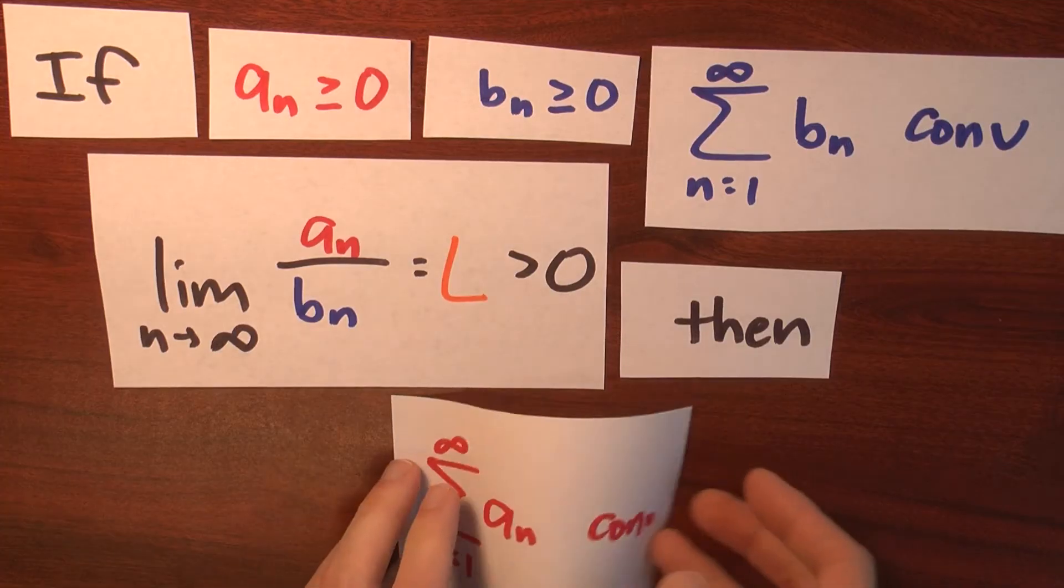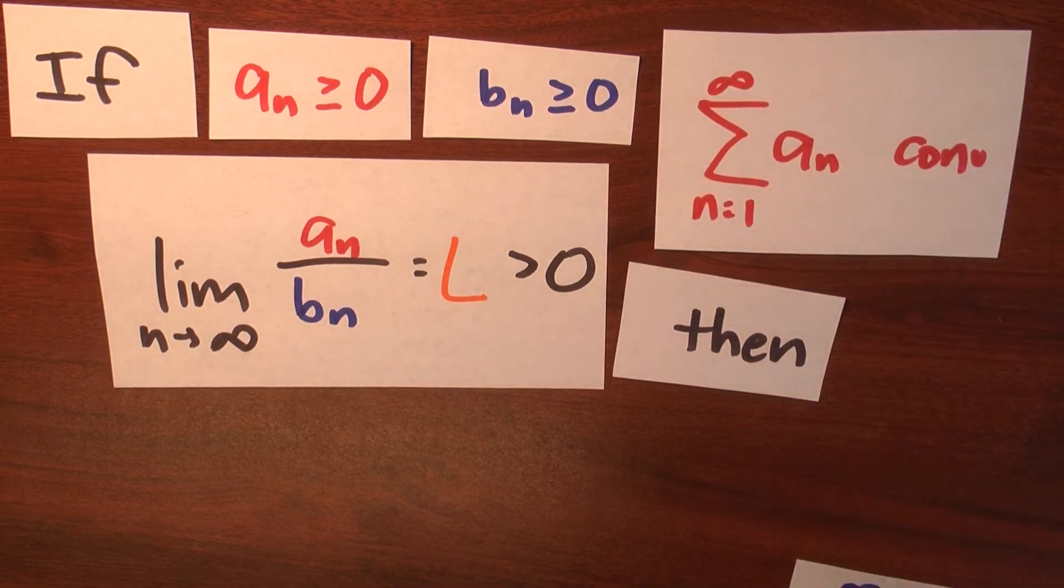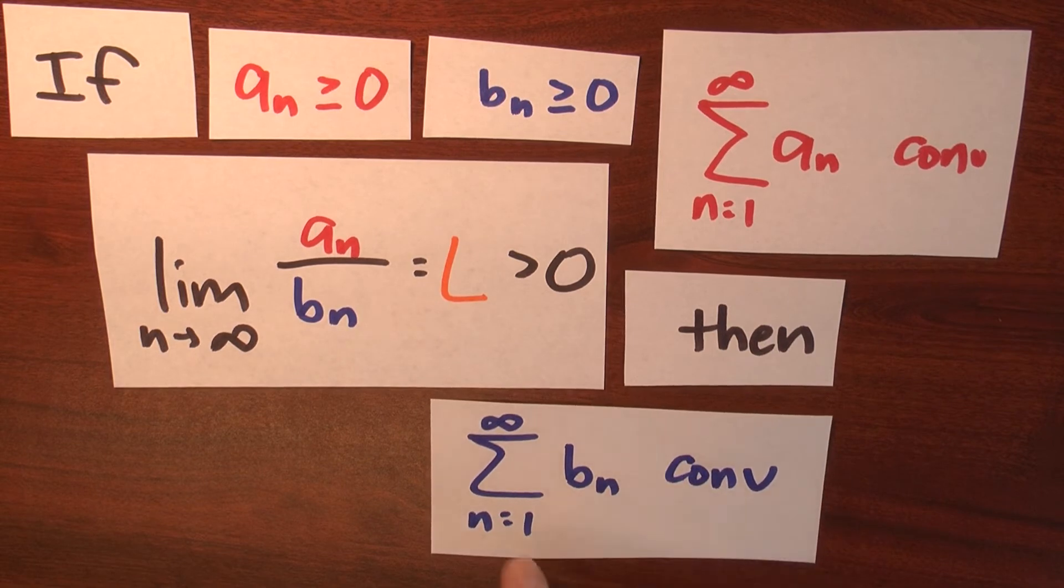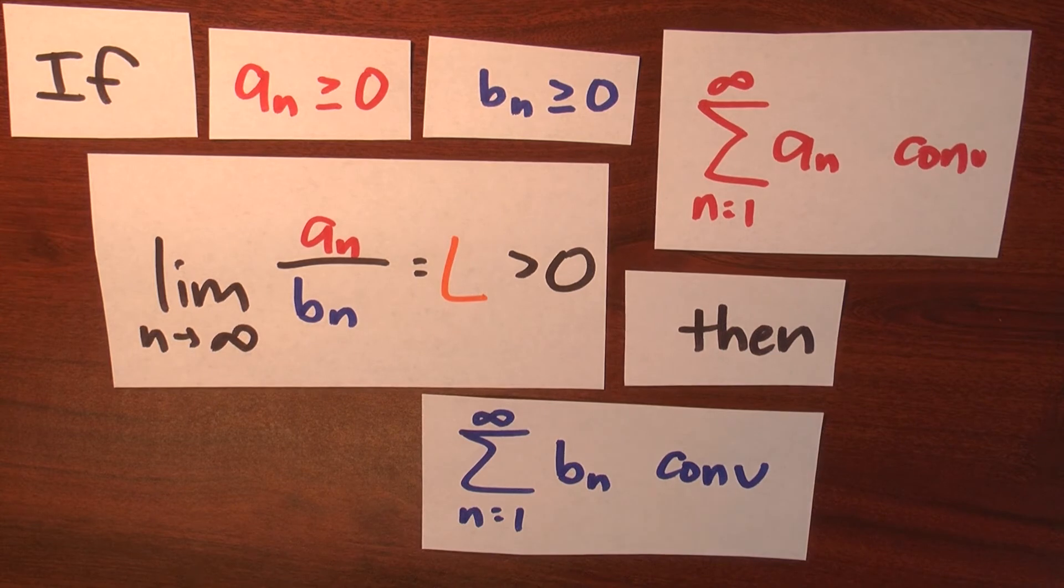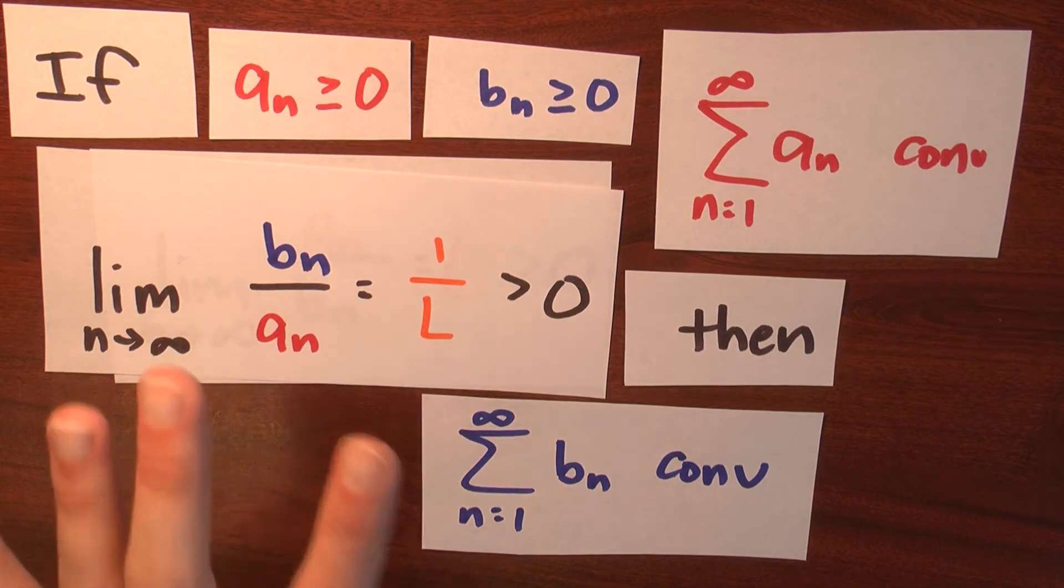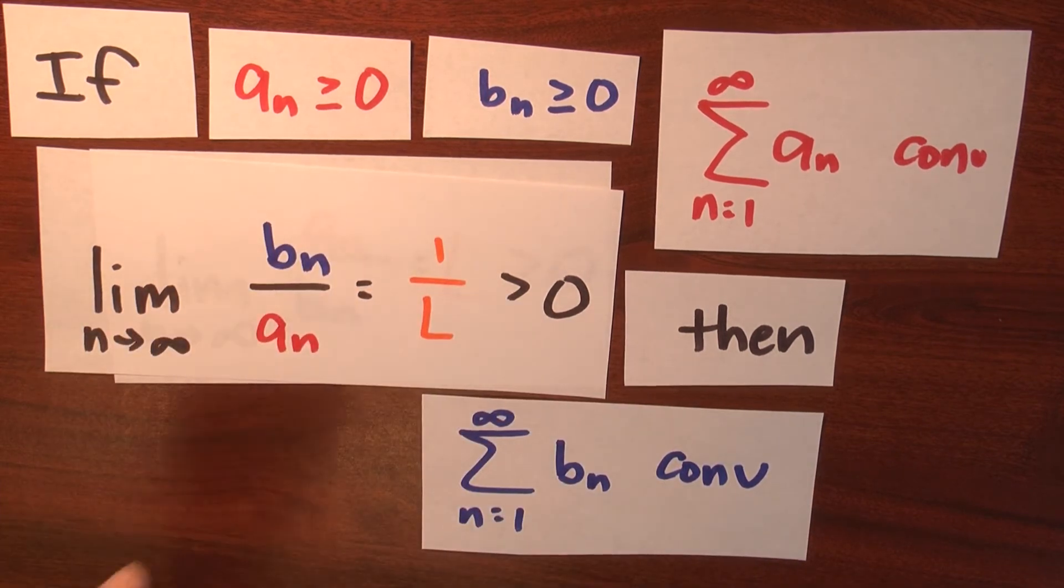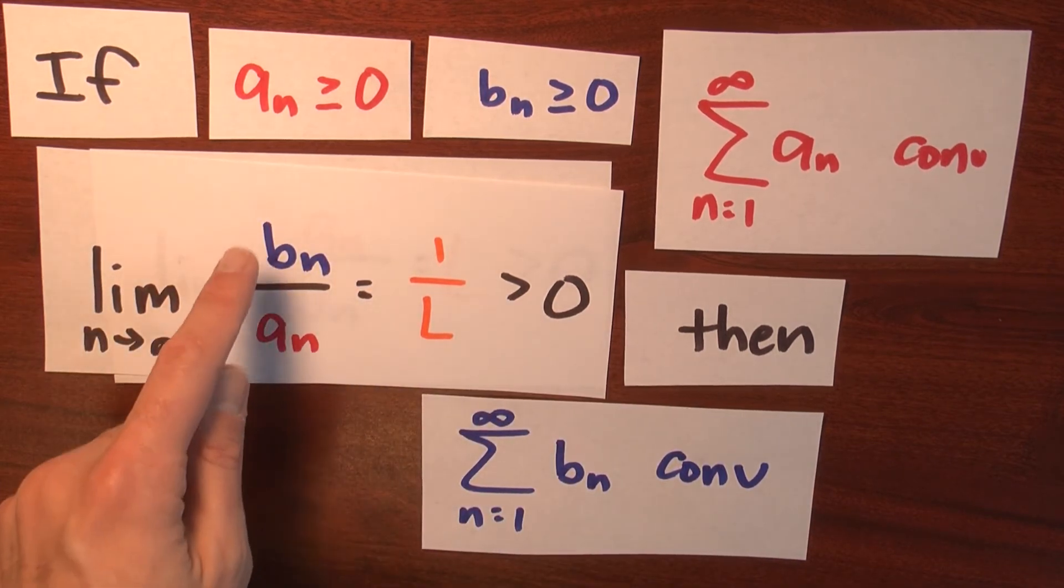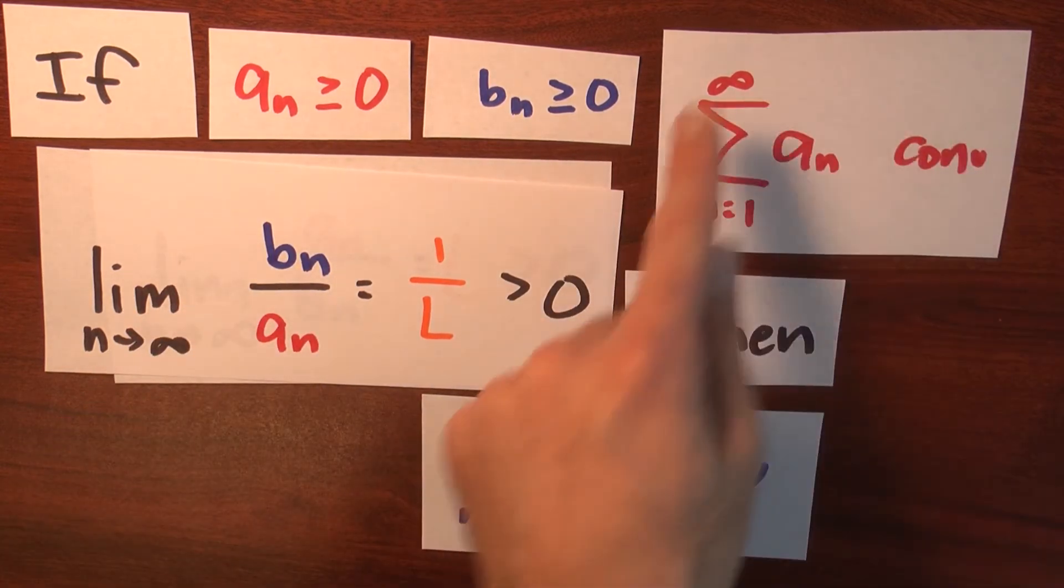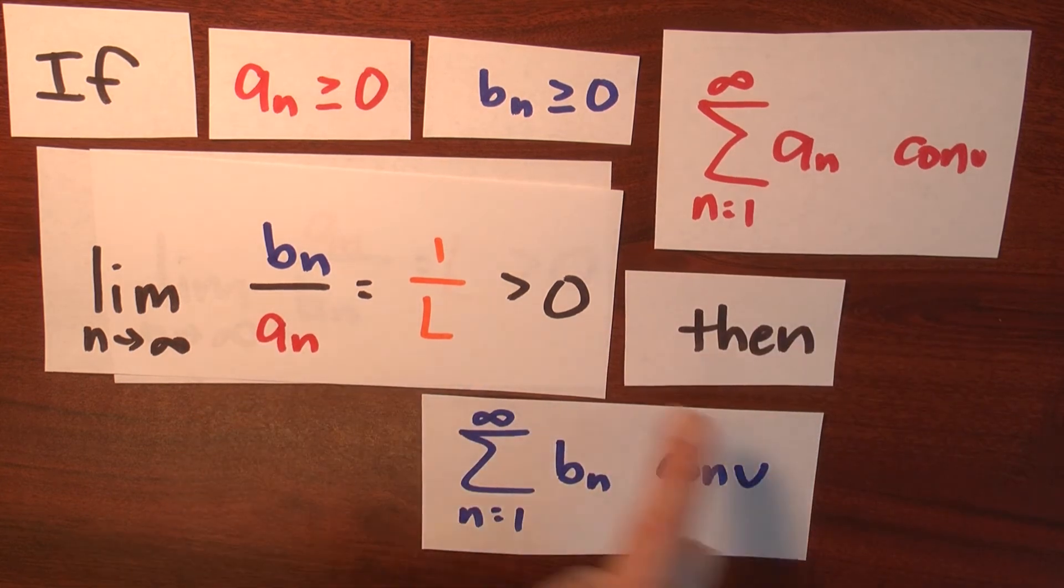Now let me exchange the roles of a and b. So I'd like to be able to start with the assumption that the series of the a sub n's converges, and then conclude that the series of the b sub n's converges. But actually, that's the exact same statement. Watch this. If I just replace this limit with this limit, now I'm in the exact same situation, except now b sub n's and a sub n's roles are exchanged. And that means that if I know that this series converges, then I know that this series converges as well.